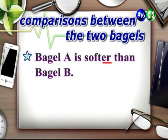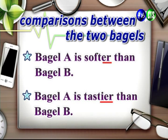We normally form the comparative form of an adjective by adding -ER to adjectives that are one syllable long, or two syllables ending in Y. For example, 'soft' becomes 'softer', and 'tasty' drops the Y, changes to I, then adds -ER to become 'tastier'. Another rule: if a one-syllable adjective ends with a single consonant, double that consonant before adding -ER — for example, 'hot' becomes 'hotter'.